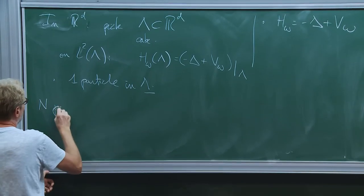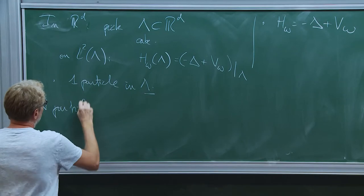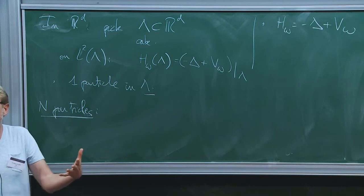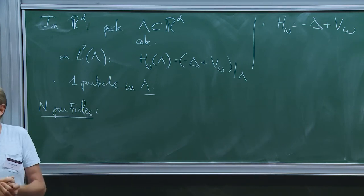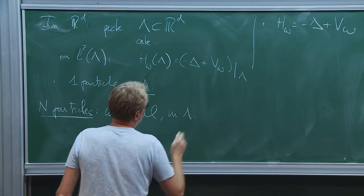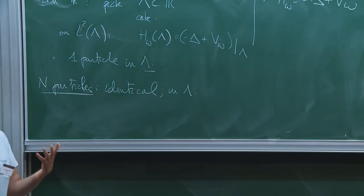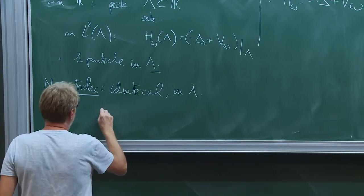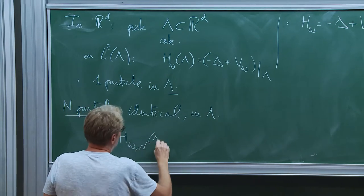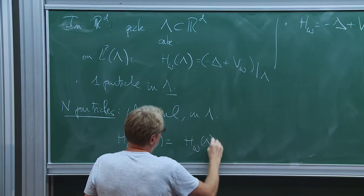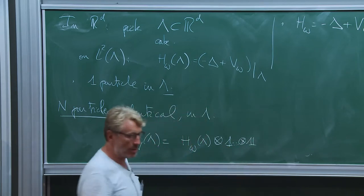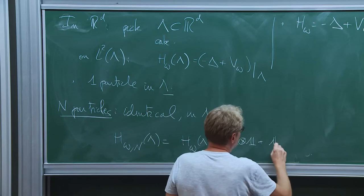So you have n copies, or n particles. To make things simple, we assume that these particles of course live in the same space, and we assume that they are identical. So n lambda. The natural Hamiltonian, these particles being identical, would be to do the following: H omega, n, lambda, which is just the following — you take H omega lambda in the first variable, tensor product, one in the other variables — and you do the same thing for all the particles.